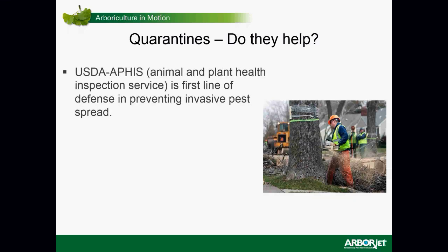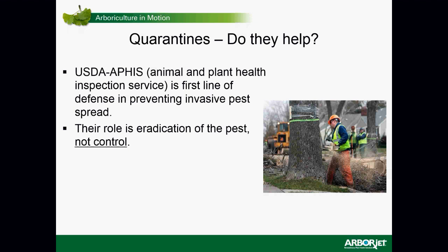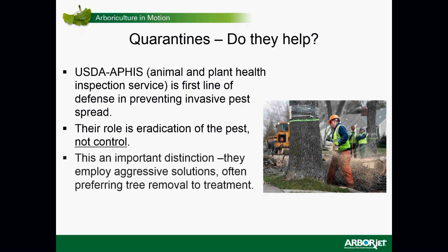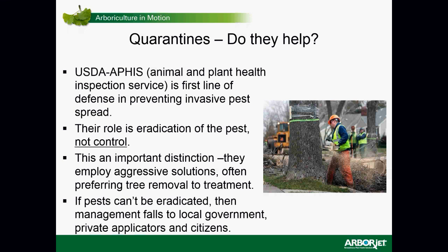So do quarantines help? USDA APHIS — the Animal and Plant Health Inspection Service — is our first line of defense in preventing invasive pests from spreading after they enter the United States. It's very important to understand that their role is eradication of the pest, not control of the pest. They're not trying to simply limit it — they're trying to eradicate it. It's an important distinction because they employ aggressive solutions, and they often prefer tree removal to tree treatment. If pests can't be eradicated, then management falls to local government, private applicators, and citizens.